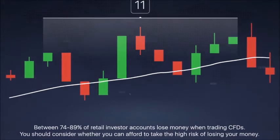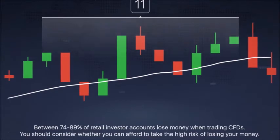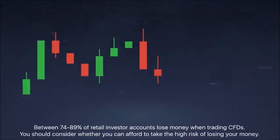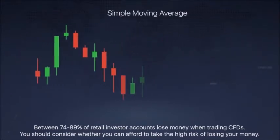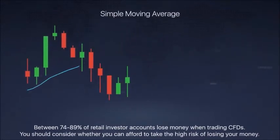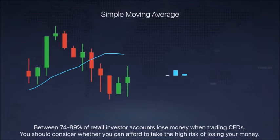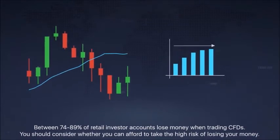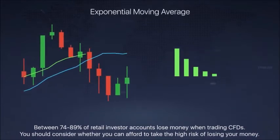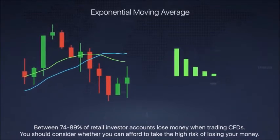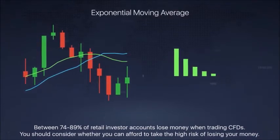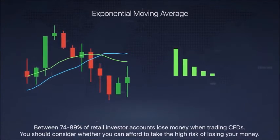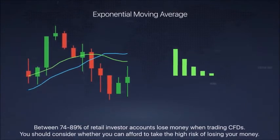In the indicator settings, you may choose the period of the candlesticks and from among 4 calculation methods. The simple moving average, or SMA, is an average arithmetical value for a given period. The exponential moving average, or EMA, smoothing works by taking into account the current average value on a previous period.